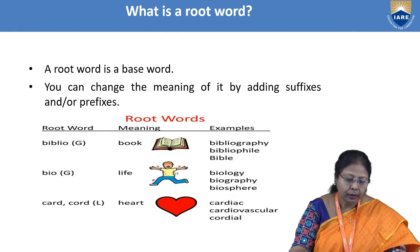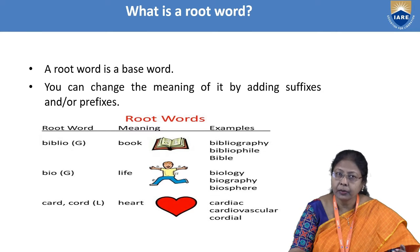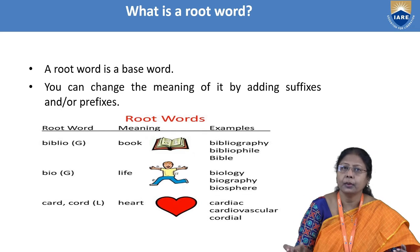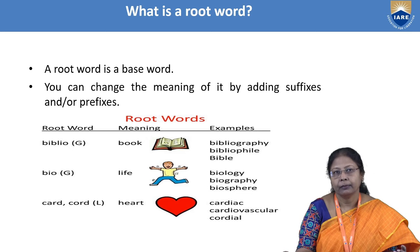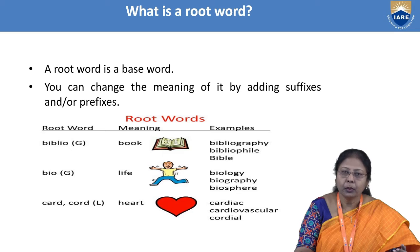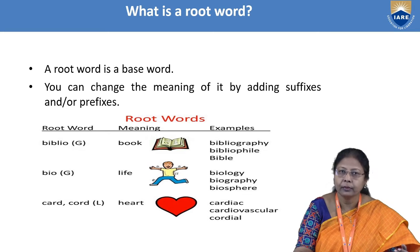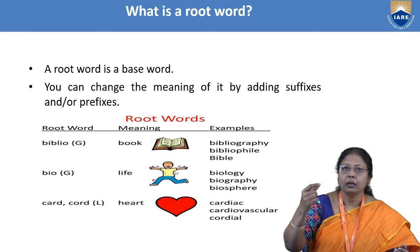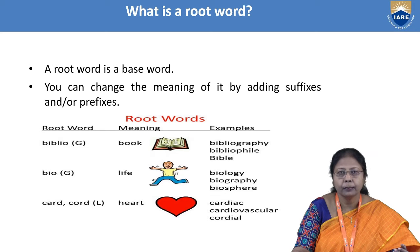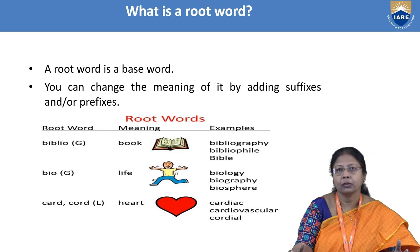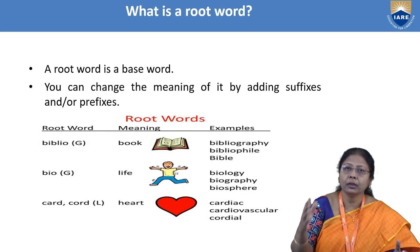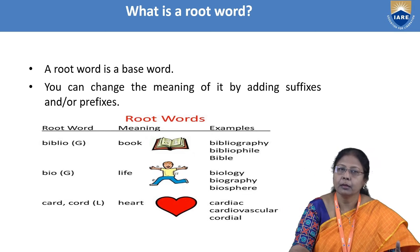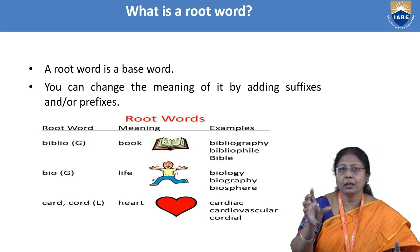A root word is a base word. You can change the meaning by adding prefixes and suffixes. For example: 'biblio' (B-I-B-L-I-O) means 'book.' When we add the suffix '-graphy,' we get 'bibliography,' meaning a collection of books. 'Bibliophile' is a person who reads books. 'Bible' is a book. So the root word for all these is 'biblio.'